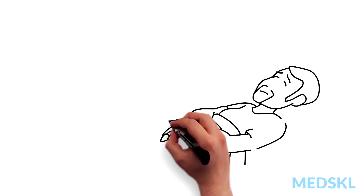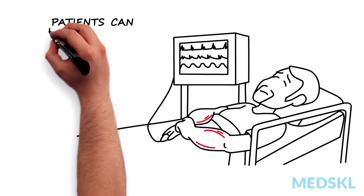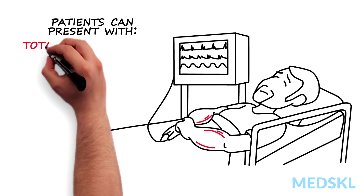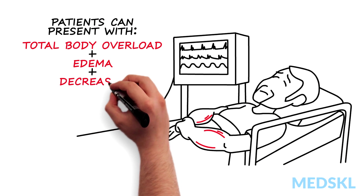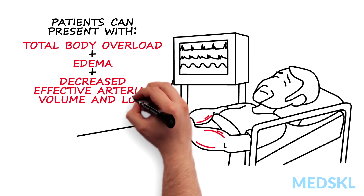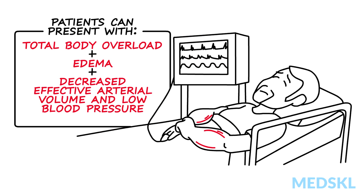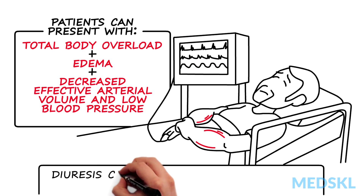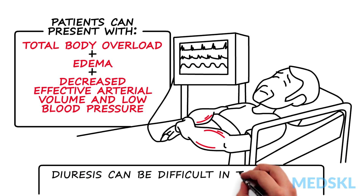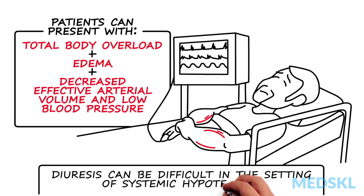Occasionally, patients can present with total body overload and manifest with edema, yet have a decreased effective arterial volume and low blood pressure. These patients pose a particularly challenging scenario, as diuresis can be difficult in the setting of systemic hypotension.